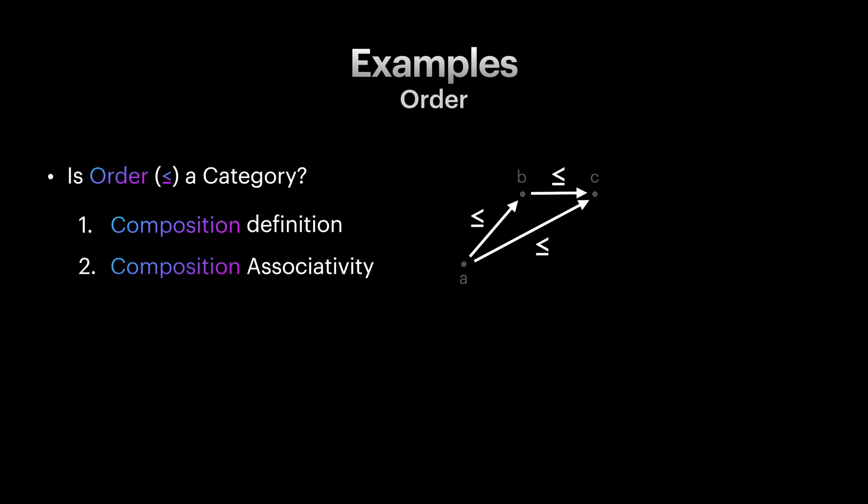In order to check associativity, let's think of another arrow from object C to object D. Based on the composition definition, we also have arrows B to D and A to D. Let's label the arrows and think about the final composition arrow. Does it make a difference to compare F and G first or compare H and G first? It doesn't, right? In any order we compare our objects, A will be smaller than D. Or in other words, we can write it like this. So far so good.